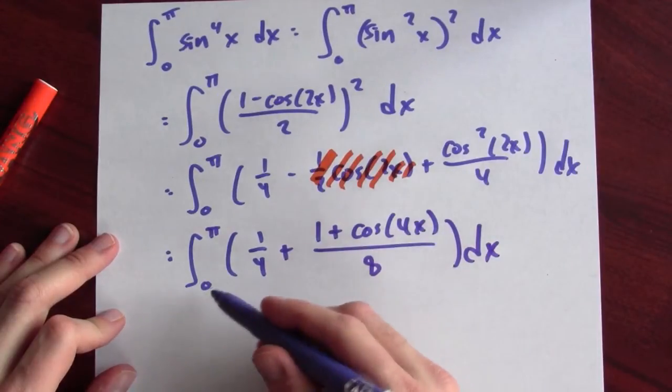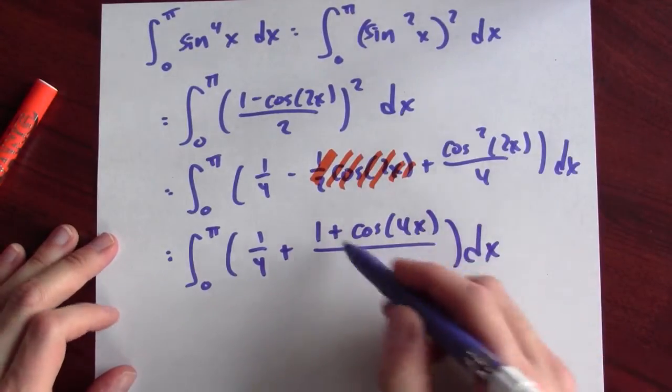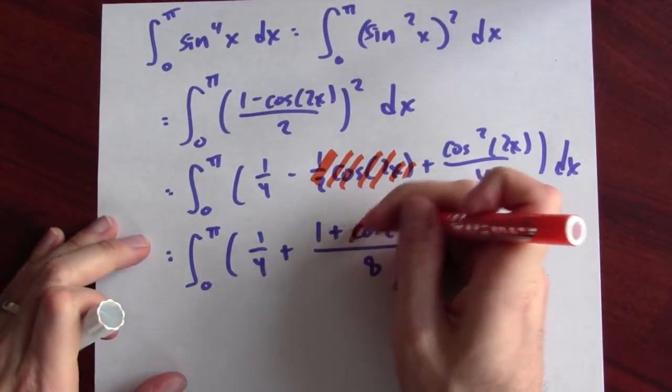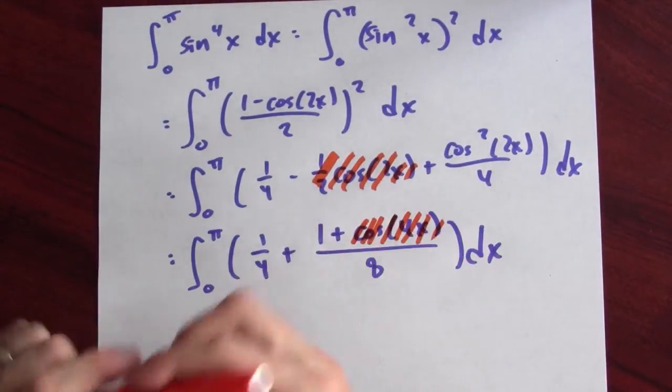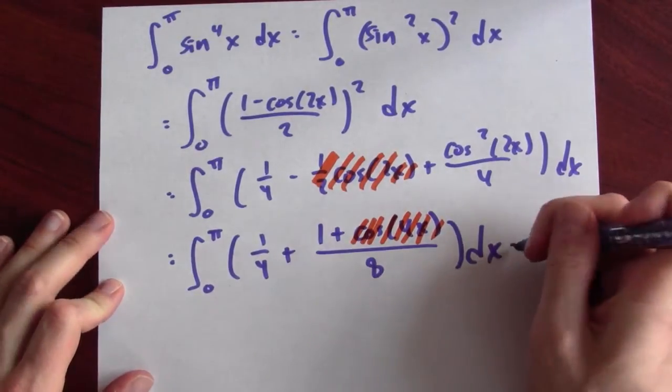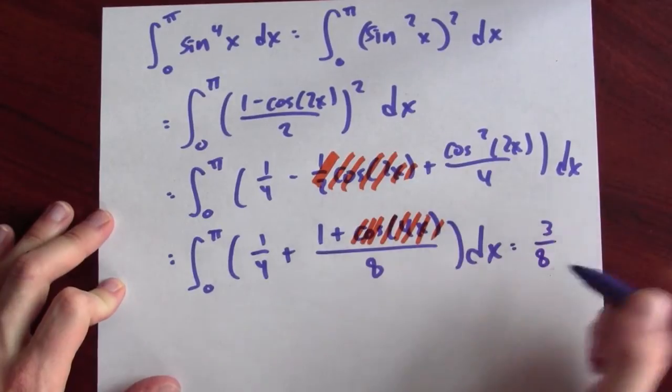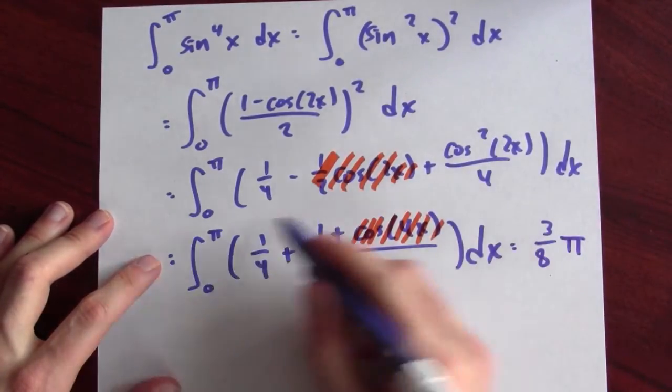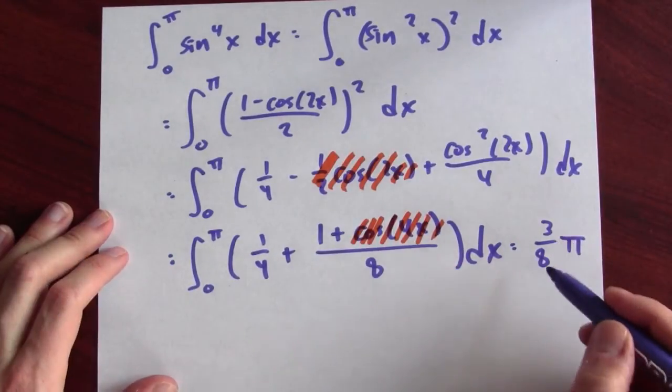But now again, if I integrate cosine 4x, x going from 0 to pi, that's integrating cosine over 2 complete periods. That ends up canceling. So I can just throw that term away. And all I'm really integrating now is 1 quarter plus 1 eighth. Well, that's 3 eighths, but I'm integrating over an interval of length pi. So this definite integral is 3 eighths pi.